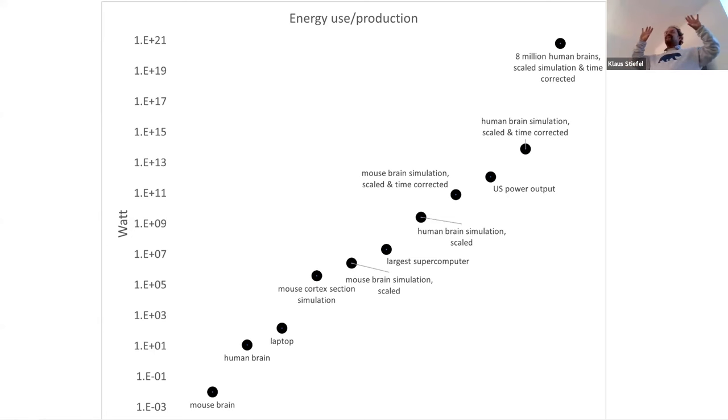And then, we have the U.S. power output. So, this is the whole electricity that largest industrial nation in the world produces. And then, you know, we have the human brain simulation just for single human brain, right? Scaled, time corrected, meaning that we simulate the whole brain and one second of simulation time is one second of human brain time. And that is already three orders of magnitude more than we get from the whole U.S. grid.